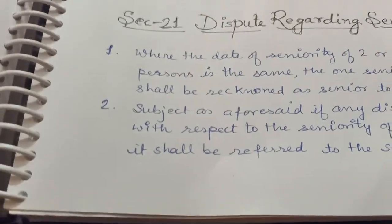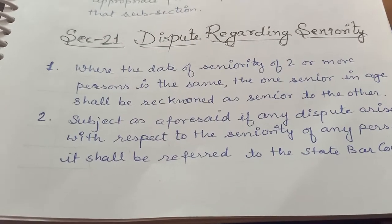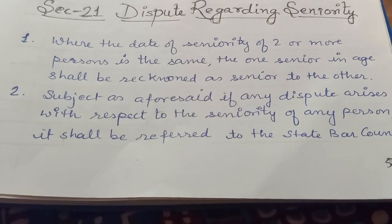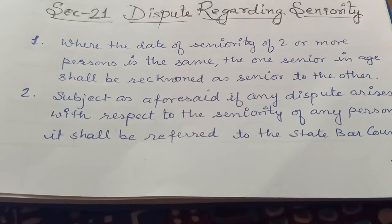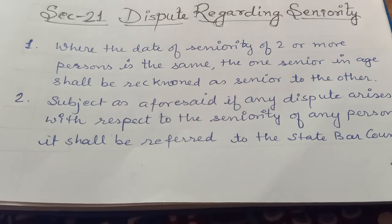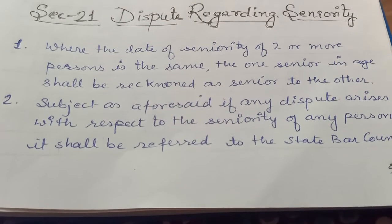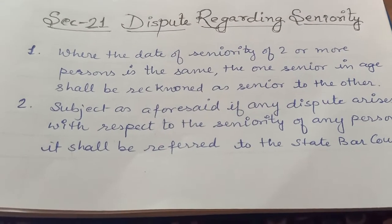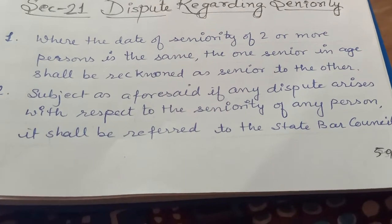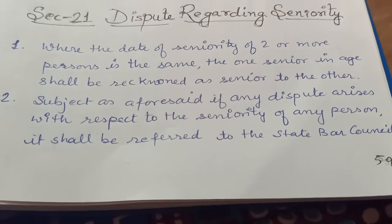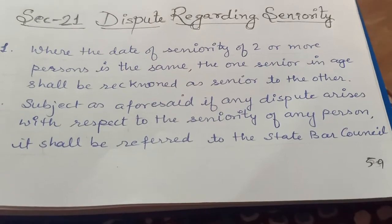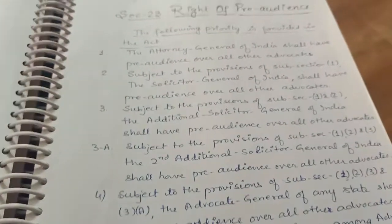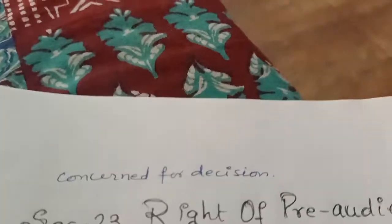Disputes regarding seniority — usme agar koi dispute aata hai — according to Section 21 of the Advocates Act 1961 — agar koi dispute seniority ko lekar hota hai, where the date of seniority of two or more persons is the same, agar do ya do se zyada logon ke seniority ki date same ho jati hai, toh the one senior in age — jiski age zyada hoti hai — shall be recorded as senior to the other. If any dispute arises with respect to seniority of any person, it shall be referred to the State Bar Council concerned for the decision.